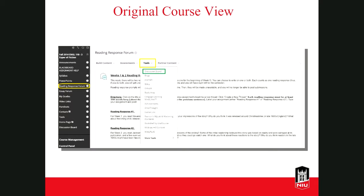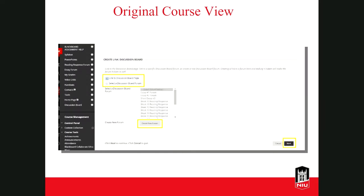The Discussion Board option should be right at the top of the tools. When you create your discussion through a content area, what you're really doing is creating a link to the discussion board. If you had already created a discussion, you could select it here and add a link to it in this content area by clicking Select a Discussion Board Forum, clicking on the forum for which you want to add the link, and then clicking Next.